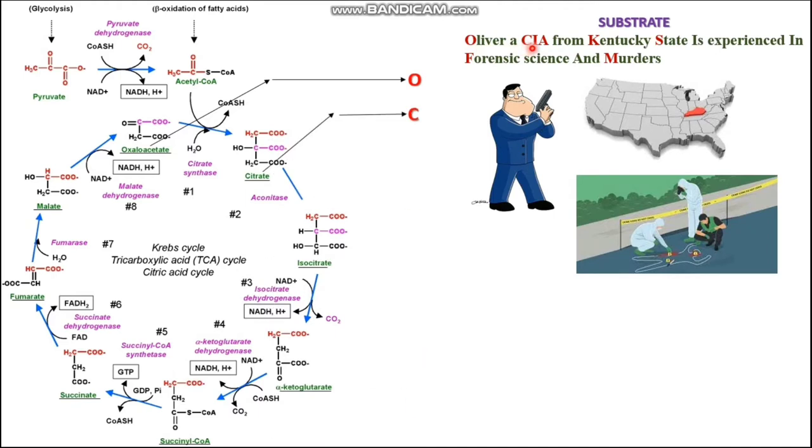The letter I of CIA abbreviation stands for isocitrate, and the letter A of CIA stands for alpha.